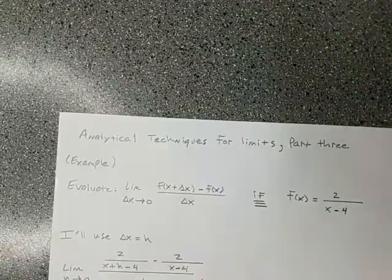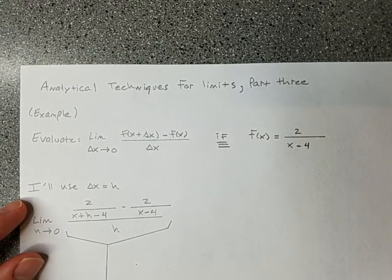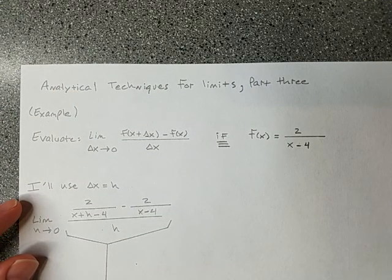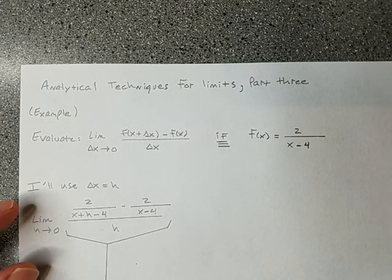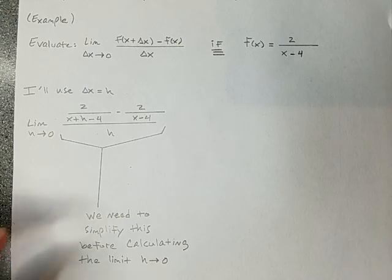There's somewhat of a leap of faith to think that, yeah, the closer this gets to zero, the closer that's going to get to two. But that's the shortcoming of numerical techniques. An analytical technique doesn't have that shortcoming. We're going to totally break this down on paper until we can definitively get the limit. So there's our limit. We need to simplify this. So about that, let's simplify that on another piece of paper.